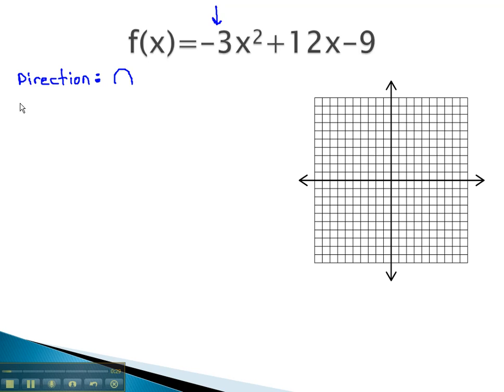The next important information we look for is the y-intercept. The y-intercept is where x is equal to 0, so all that's left is the c value, or negative 9. This is the first point on our graph at negative 9 on the y-axis.